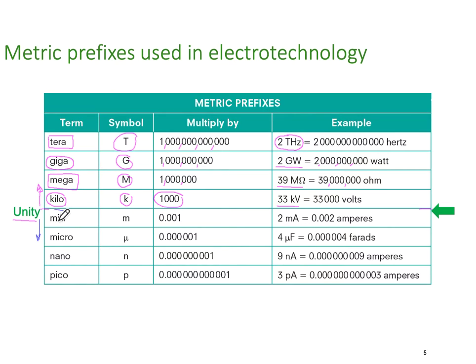As we move in the opposite direction, we've got millis, small m, lowercase m, 0.001 or thousandths. So two milliamps is the same as two thousandths of an ohm or 0.002 amperes.